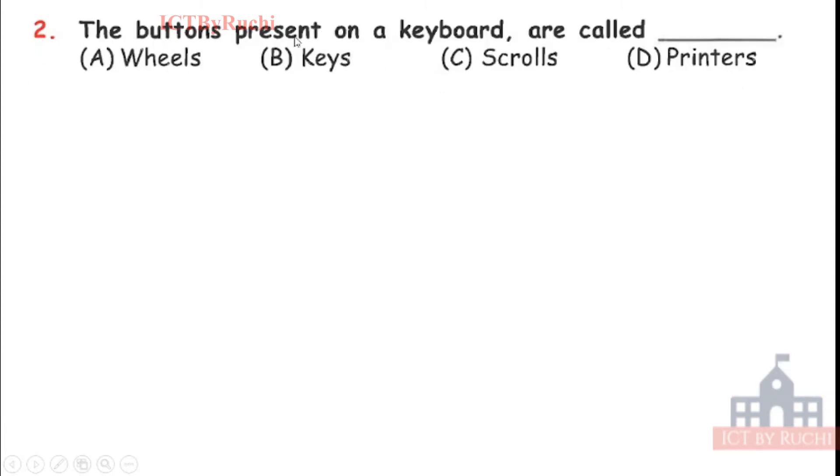Next. The buttons present on a keyboard are called wheel, keys, scrolls or printer. Very easy. Tell me the answer first. Answer is B. The buttons present on a keyboard are called keys. As we can see, keyboard, keys coming in front.